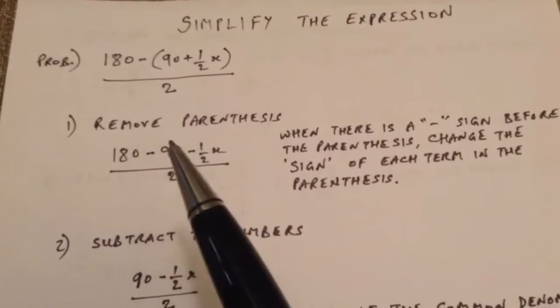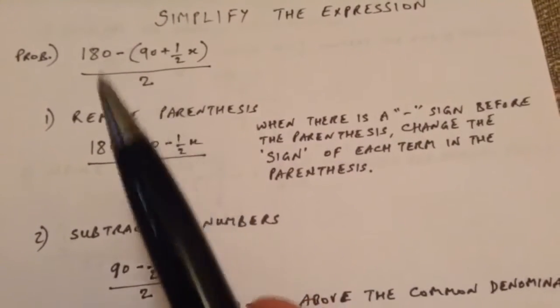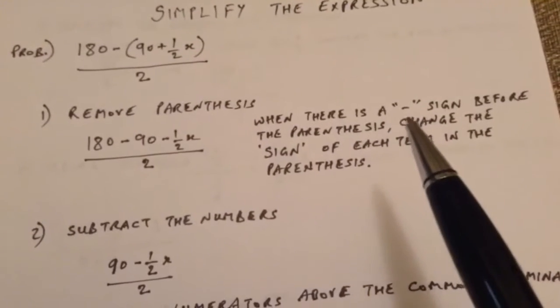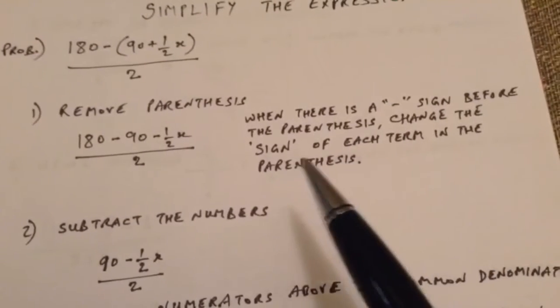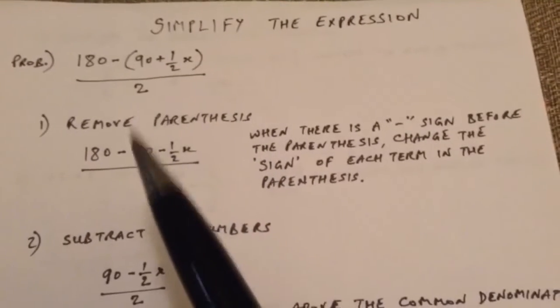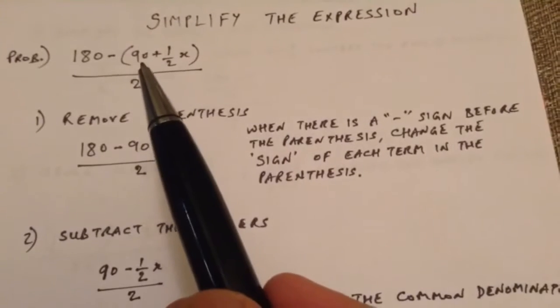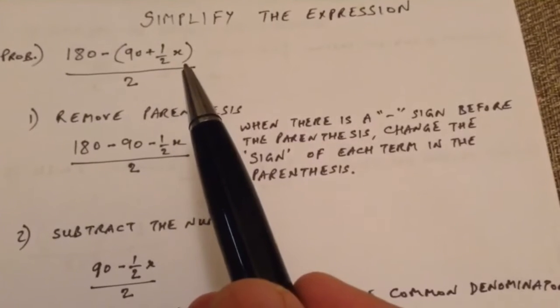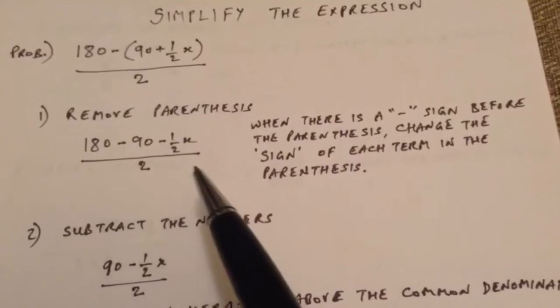So first thing we do is remove the parentheses. When we remove the parentheses in this example, when there is a negative sign before the parentheses, change the sign of each term in the parentheses. So when we open the parentheses, we say negative 90 because here we have positive 90 that becomes negative 90, and then plus one-half x becomes minus one-half x divided by 2.